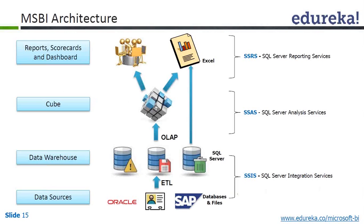We'll learn what a cube is. If you see this picture, it looks like a cube — this is a multi-dimensional structure. If you see the cube from one angle, you cannot see the back side, and if you see the back side, you cannot see the front side. But the information is multi-dimensional — it has three axes: x-axis, y-axis, and z-axis.